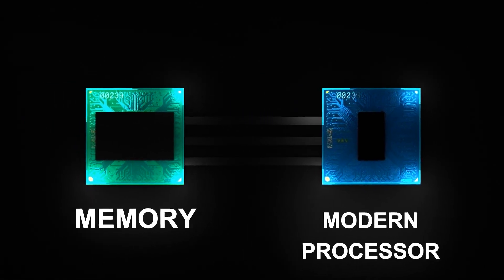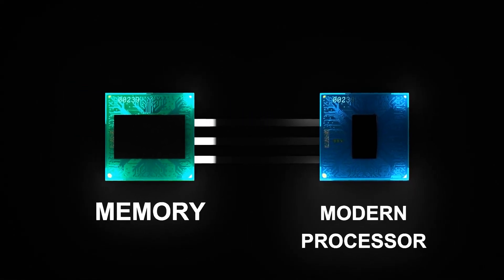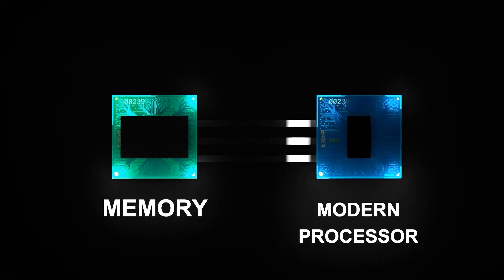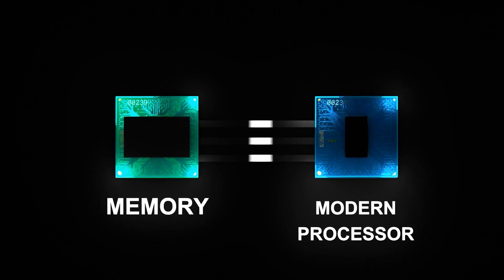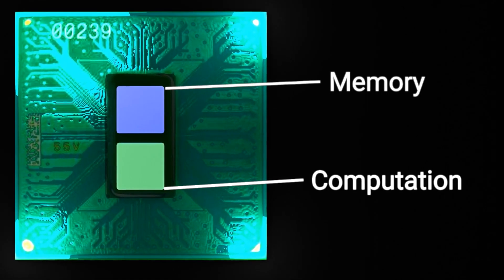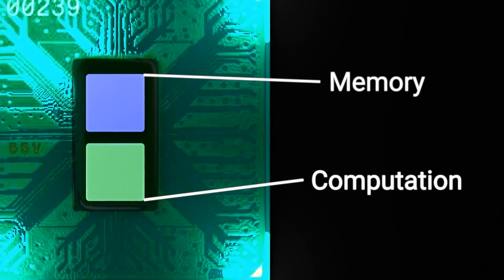Neuromorphic chips have another advantage. Modern chips communicate with a separate memory source, sending massive packets of information back and forth wastes time and energy. Neuromorphic chips bypass the memory bottleneck by combining memory and computation on the same chip, just like a brain.